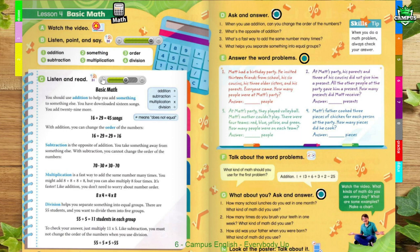8 times 4 equals 4 times 8. Division helps you separate something into equal groups. There are 55 students, and you want to divide them into 5 groups. 55 divided by 5 equals 11 students in each group. To check your answer, just multiply 11 times 5. Like subtraction, you must not change the order of the numbers when you use division. 55 divided by 5 does not equal 5 divided by 55.